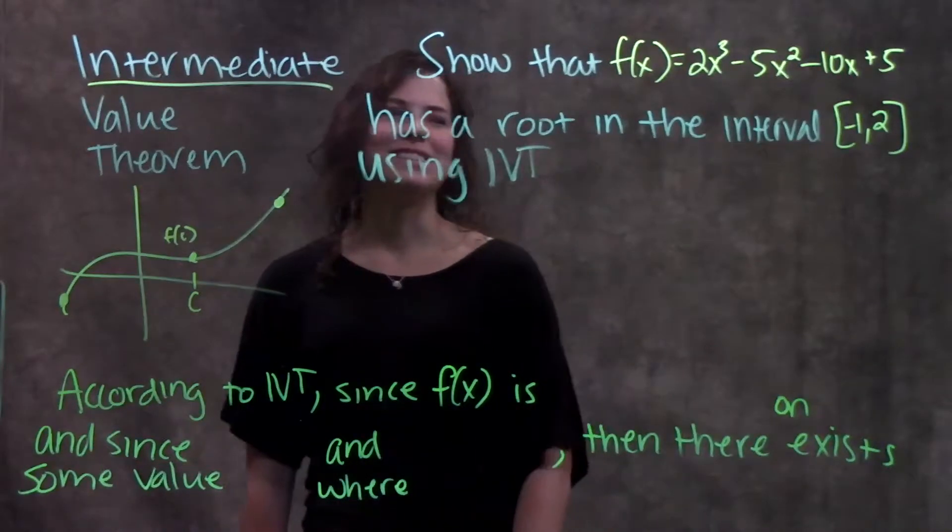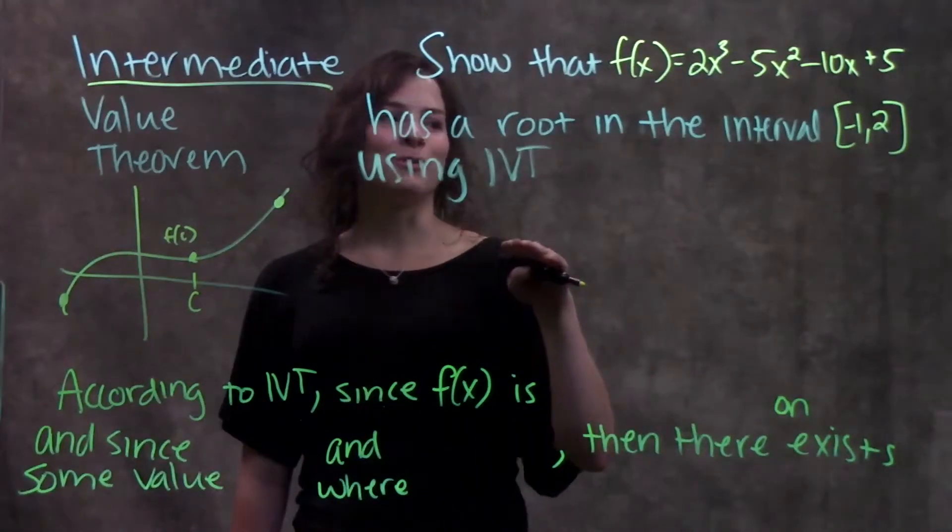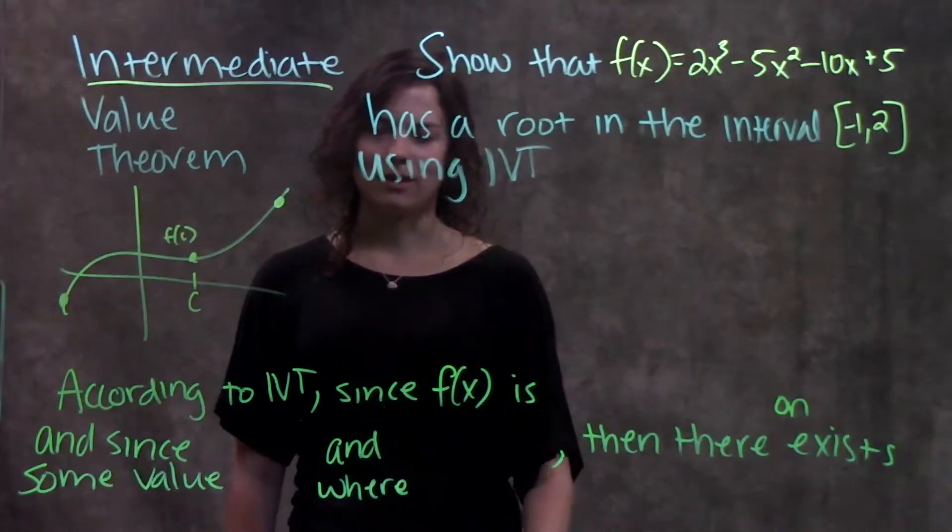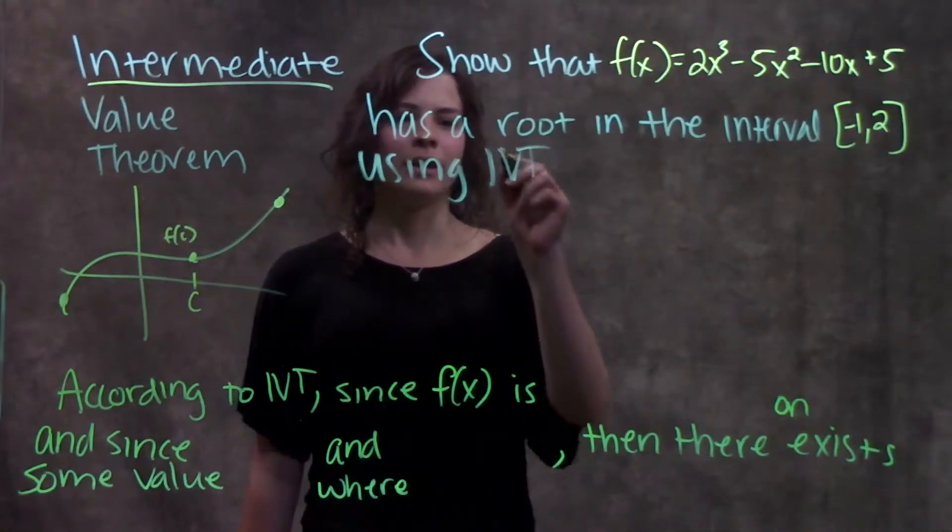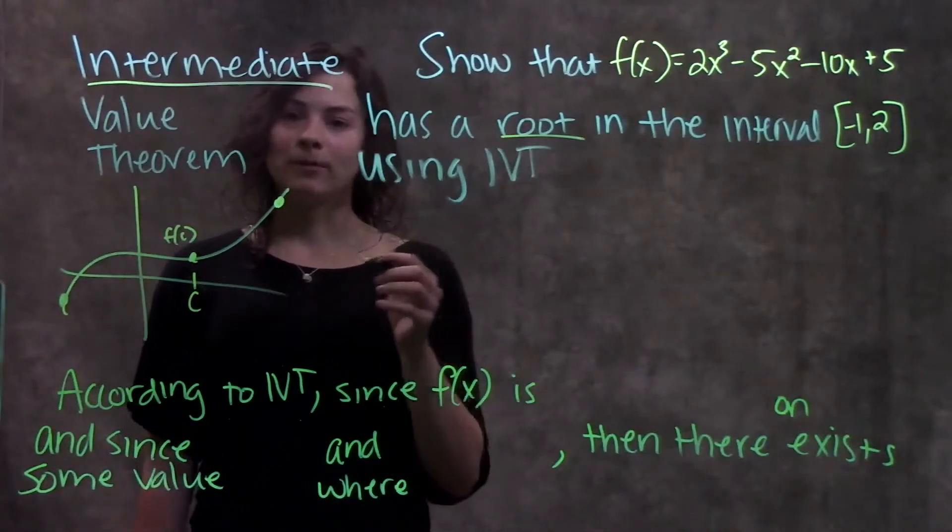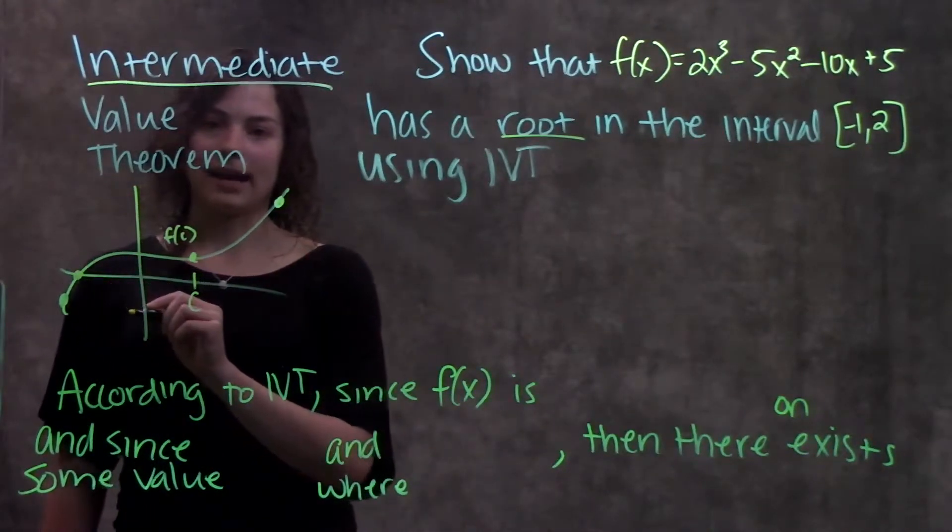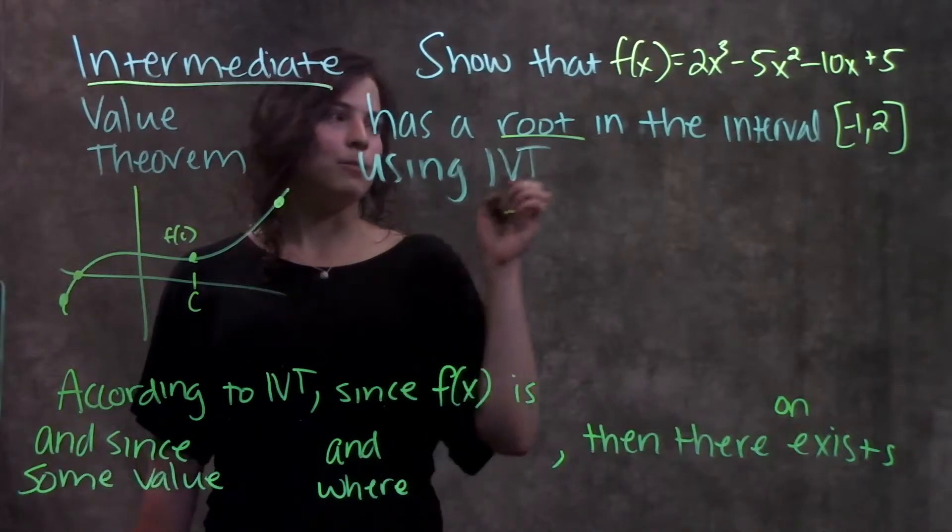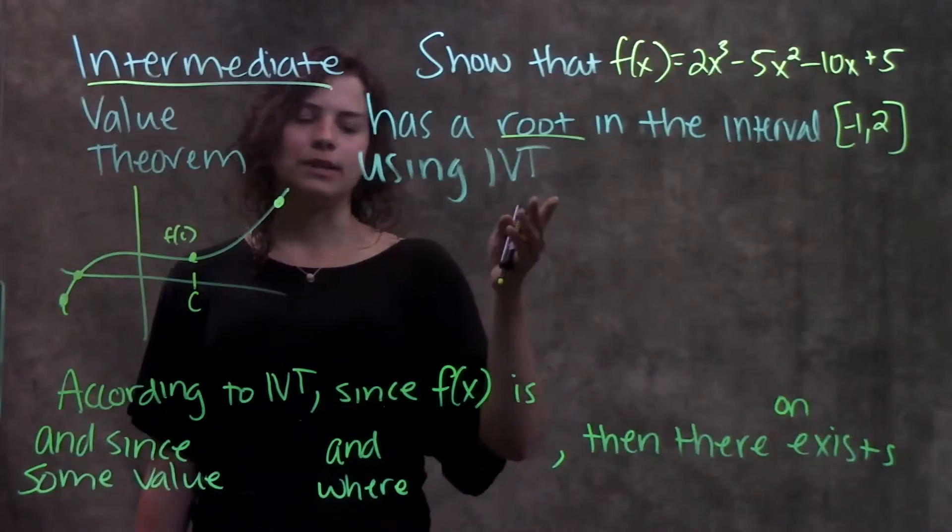So this example says show that this function has a root in the interval negative one to two using the Intermediate Value Theorem. Alright, first, a root, if you remember back to algebra, the root of a function is just wherever it crosses the x-axis, wherever y is equal to zero. Alright, and we're going to prove that there's a root in this interval using IVT.